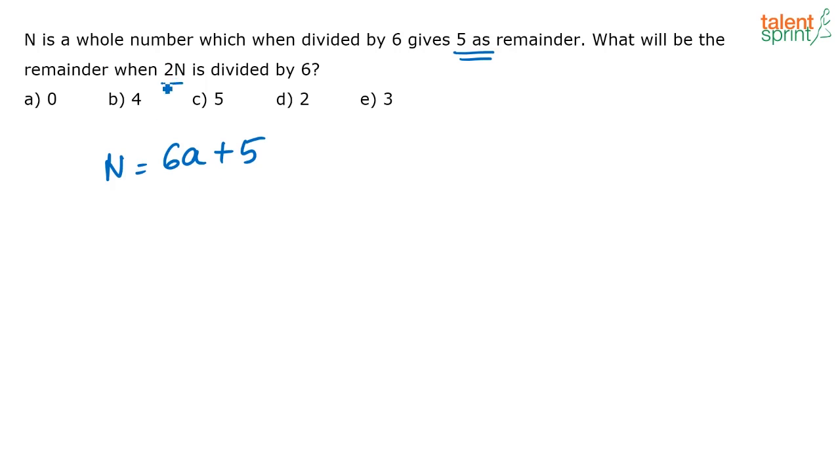Now, the question is when 2N is divided by 6, what is the remainder? So what is 2N? How will you represent 2N in general? 2N is nothing but multiply this by 2. 12a plus 10 divided by 6, or this is nothing but 12a plus 6 plus 4 divided by 6.